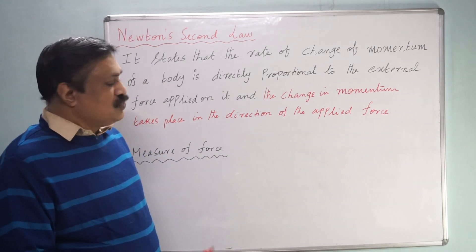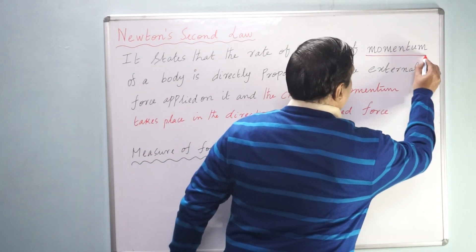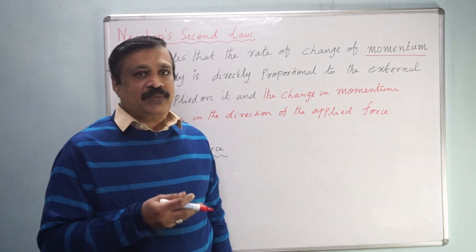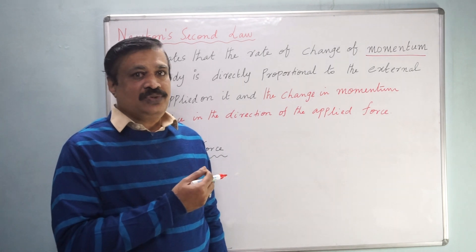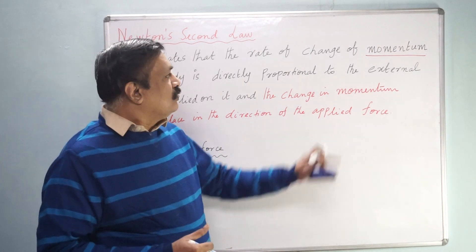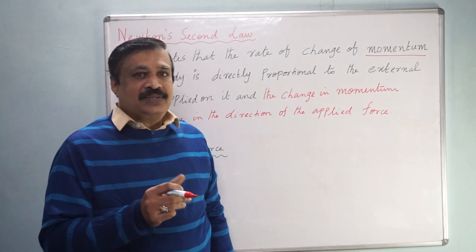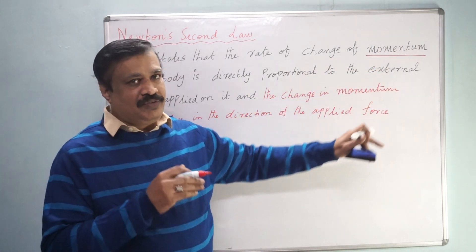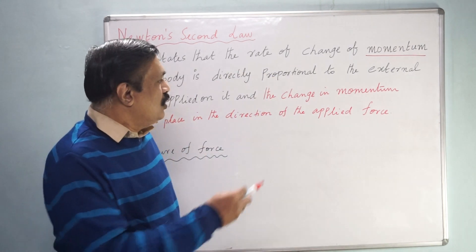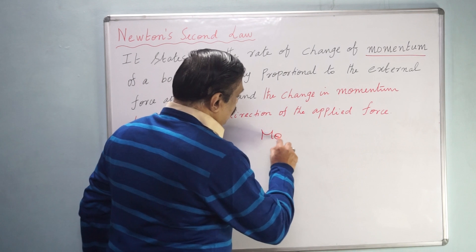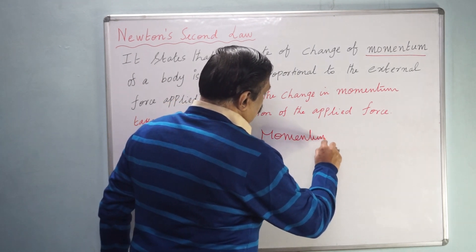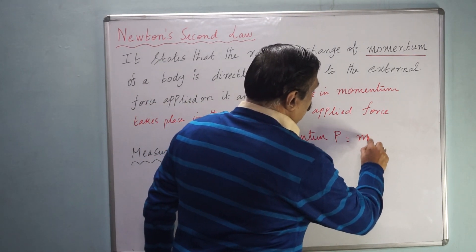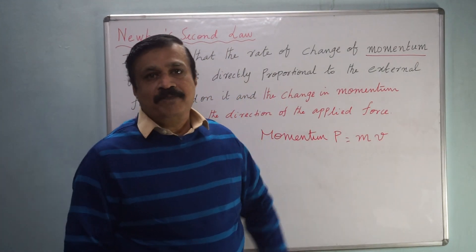Here we are introducing one word called momentum. Science students will be knowing this term, but commerce students and some humanities students are also watching these videos, therefore I want to explain this term. What is meant by momentum? Momentum is denoted by the letter P. It is equal to mass into velocity — momentum equals mass into velocity.